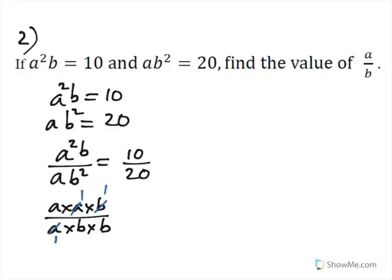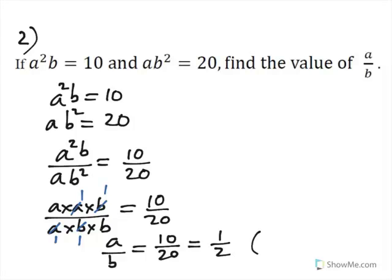And that b will cancel with this one to leave us in the numerator—well, let's put that equal to 10 over 20—to leave us in the numerator a times 1 times 1 is a, denominator 1 times 1 times b is b, is 10 over 20. And it's a half. 10 twentieths is a half. If it was a multiple choice, they may give you an option of 0.5, then you write it down, or 50 percent, or anything like that. Well, I hope you managed that one.